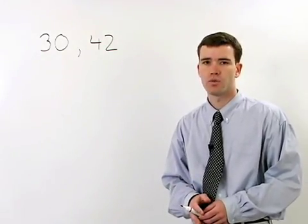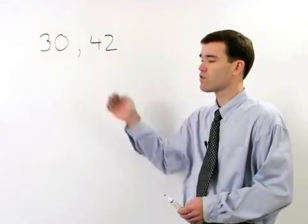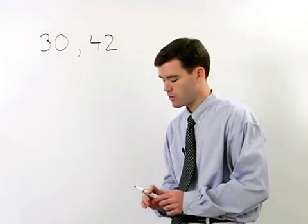To find the greatest common factor between two monomials that are just numbers like 30 and 42, we start by setting up a factor tree for each of those numbers.